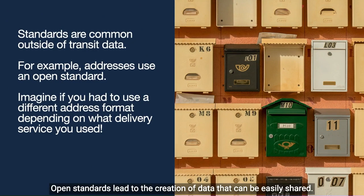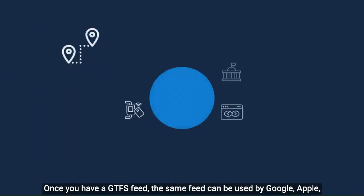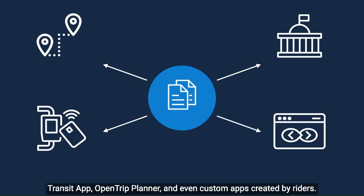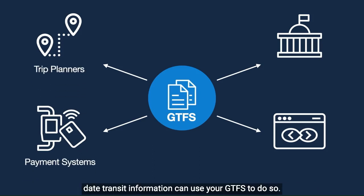Open standards lead to the creation of data that can be easily shared. Once you have a GTFS feed, the same feed can be used by Google, Apple, Transit App, Open Trip Planner, and even custom apps created by riders. Anyone who wants to provide accurate and up-to-date transit information can use your GTFS to do so.